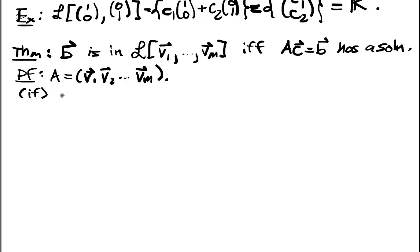So let's do the if direction. So the if direction, well if AC is equal to B has a solution, then of course B is going to be equal to AC.